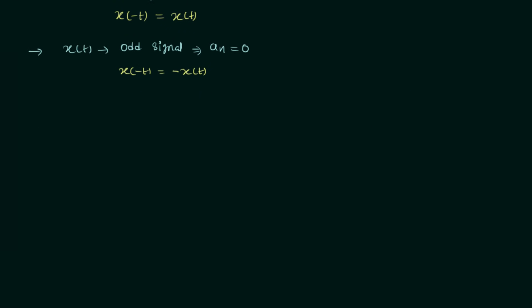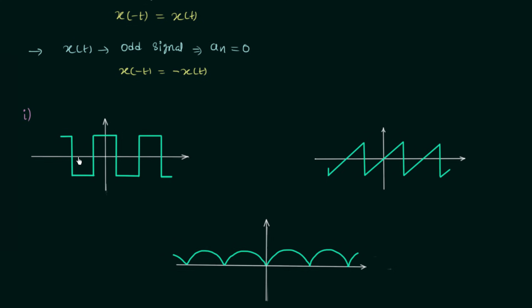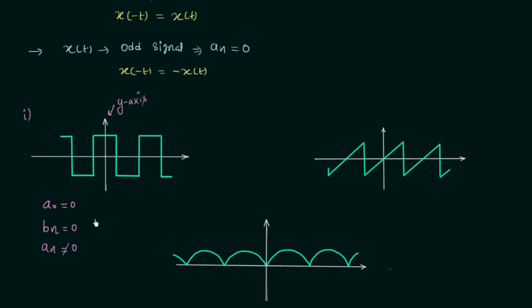In the first example we have a rectangular wave. The waveform is clearly symmetrical about the time axis, so a_0 = 0. Also, this waveform is symmetrical about the y-axis — it is a mirror image about the y-axis — which means the signal is even, and therefore b_n = 0. There is no need to calculate a_0 or b_n for this waveform. Simply calculate a_n using the formula and you will have the Fourier series expansion for this rectangular wave.